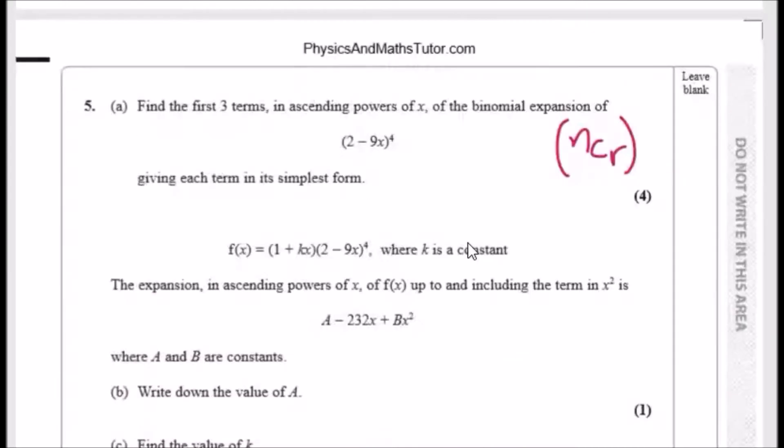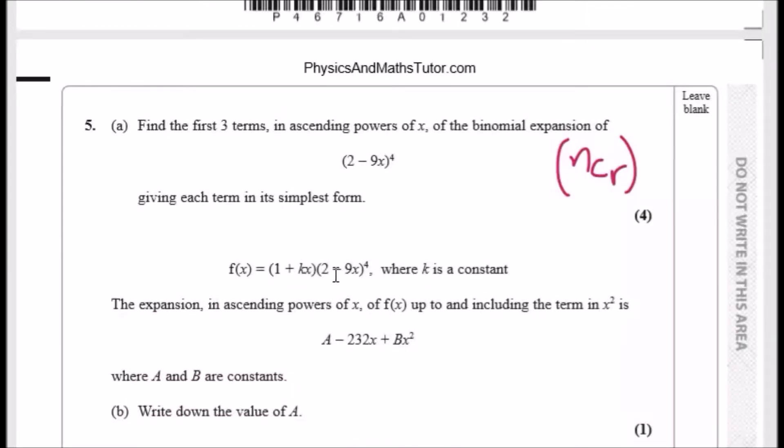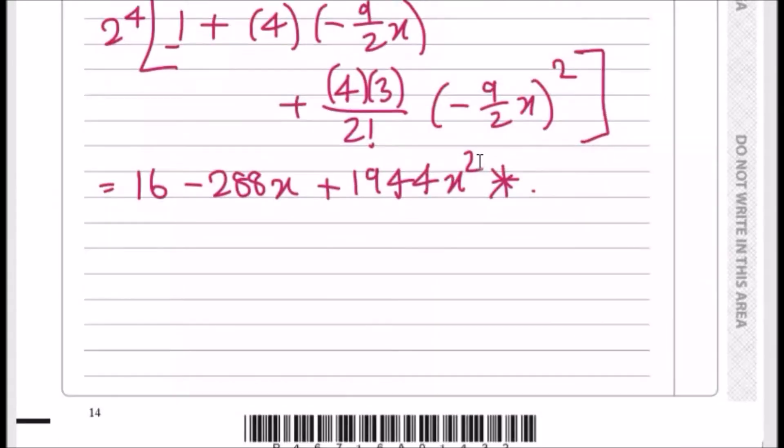Now you have to find the values of A, B, and K, so effectively we're going to do three for the price of one. Let's do it. Let's go ahead and expand this term up to and until x squared. So to do this fast, I'm just going to rewrite this one as all of this times (1+kx).